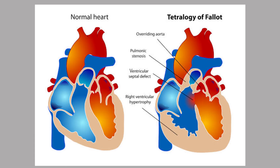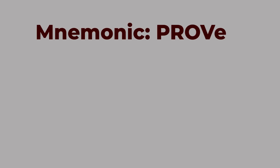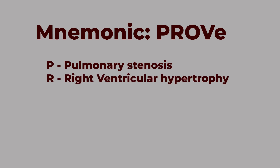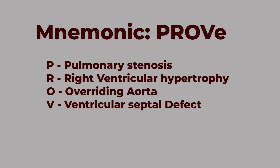There is a mnemonic to remember the features of Tetralogy of Fallot, termed PROVE: P — Pulmonary stenosis. R — Right ventricular hypertrophy. O — Overriding of the aorta. V — Ventricular septal defect. It's simple — you can remember all of this in a very simple way.